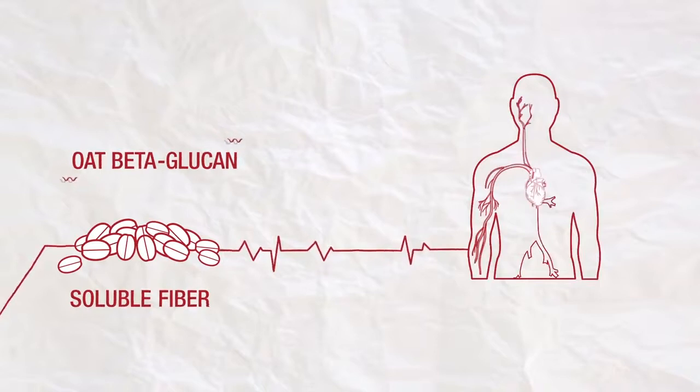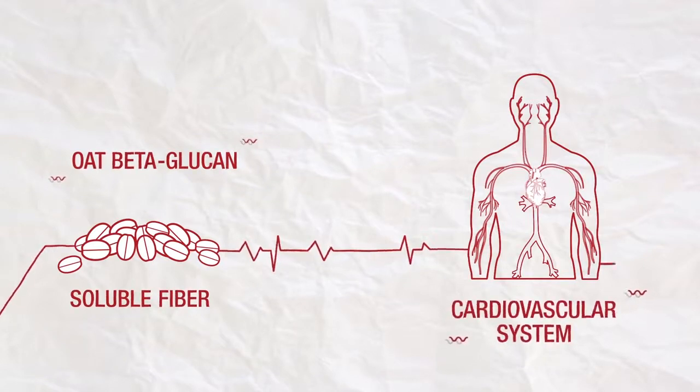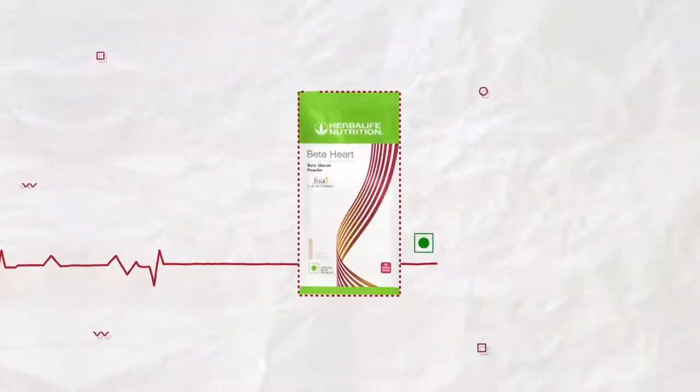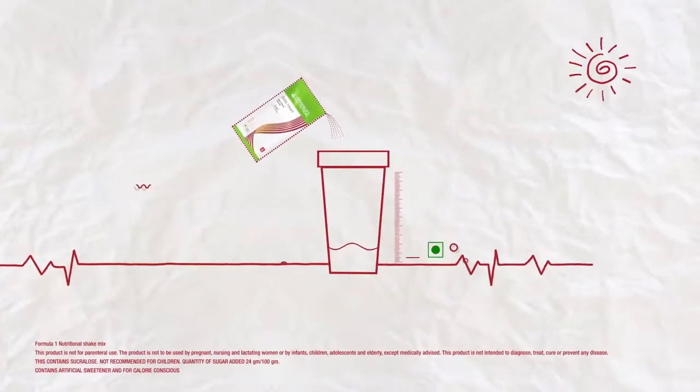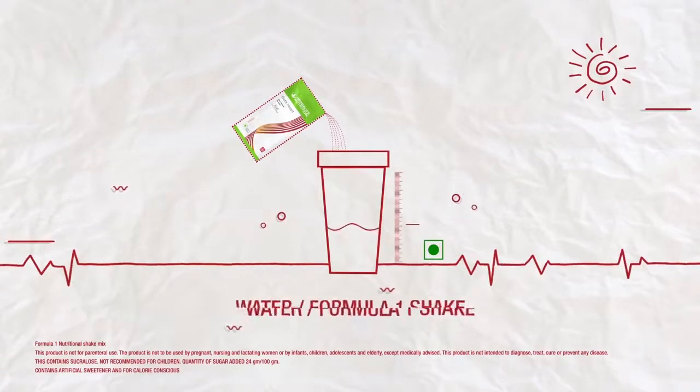Oat beta-glucan present in Beta Heart is a healthy way to help support smooth functioning of the cardiovascular system. Each serving of Beta Heart contains 3 grams of oat beta-glucan. Mix the contents of one sachet with 250 milliliters of water or Formula 1 shake of your choice and consume once daily.